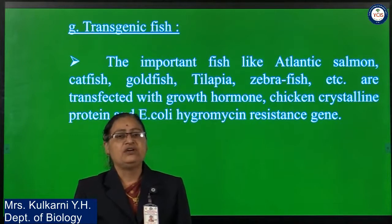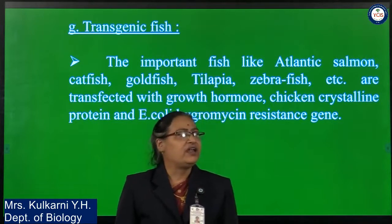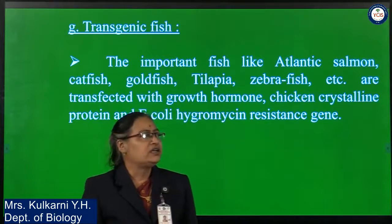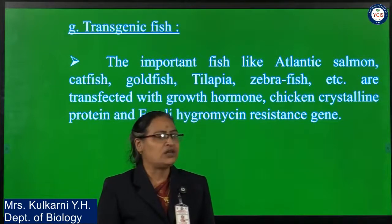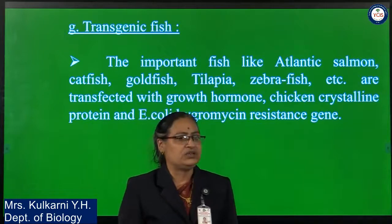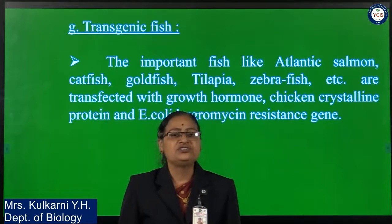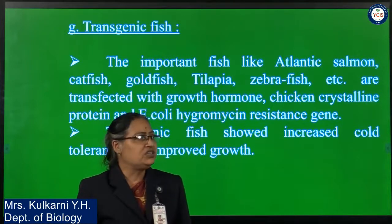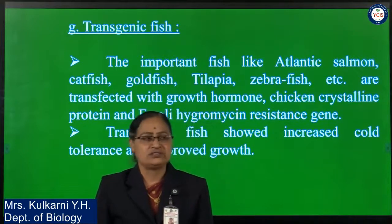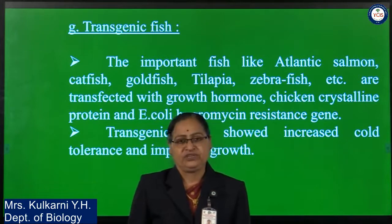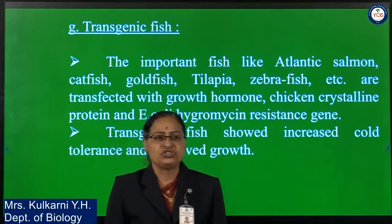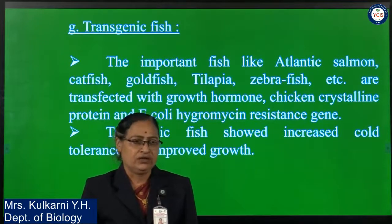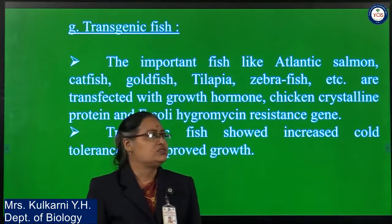Transgenic fish varieties include Atlantic salmon, catfish, goldfish, rainbow trout, zebrafish, tilapia, and others. These are transferred with growth hormone, chicken crystalline protein, and E. coli hygromycin resistance gene. The significance is that transgenic fish show increased cold resistance, improved growth, better quality and quantity of fish production, better preservation, and improved economic value.